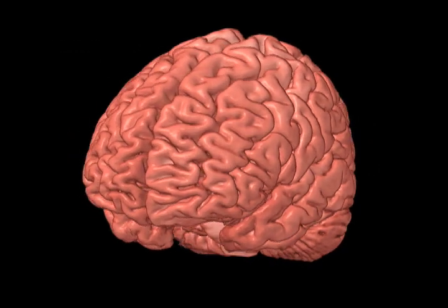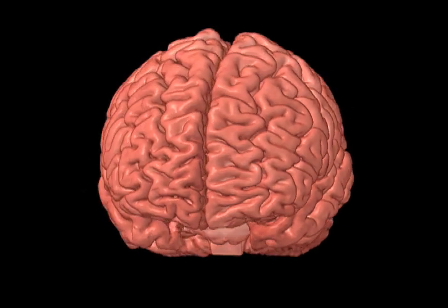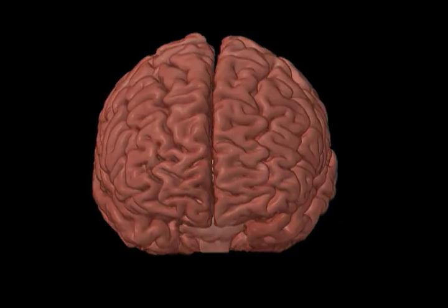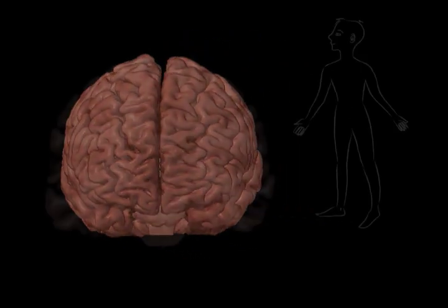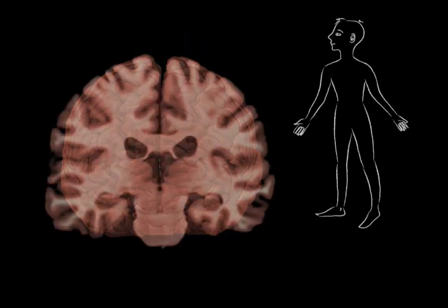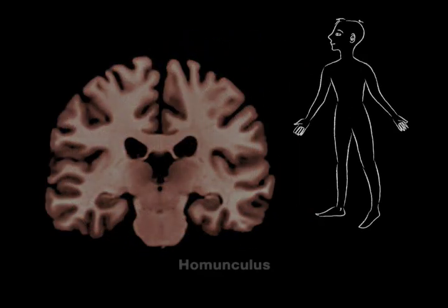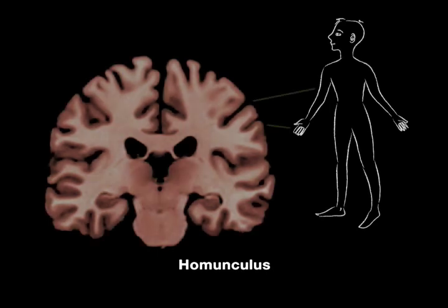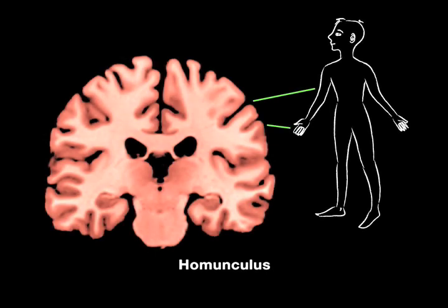Interestingly, nerve cells in the motor cortex are arranged like a little man, or a homunculus. For example, nerves that represent the hand are next to nerves that represent the arm, which in turn are next to the shoulder, and so forth.